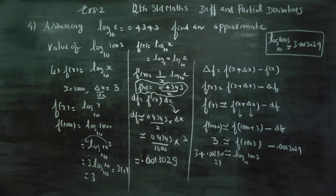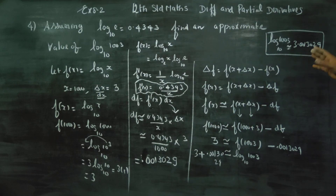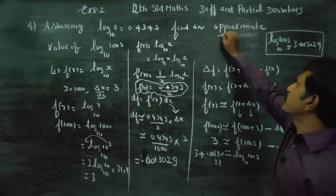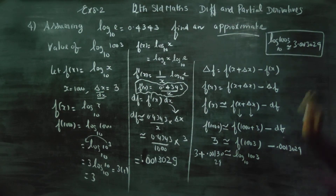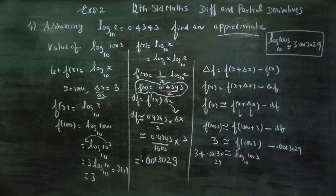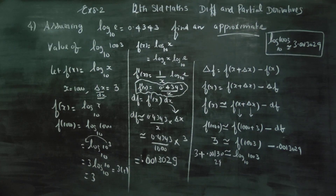We are replacing delta f by df. They are asking us to find an approximate value. Your answer will be 3.0013029. Thank you.